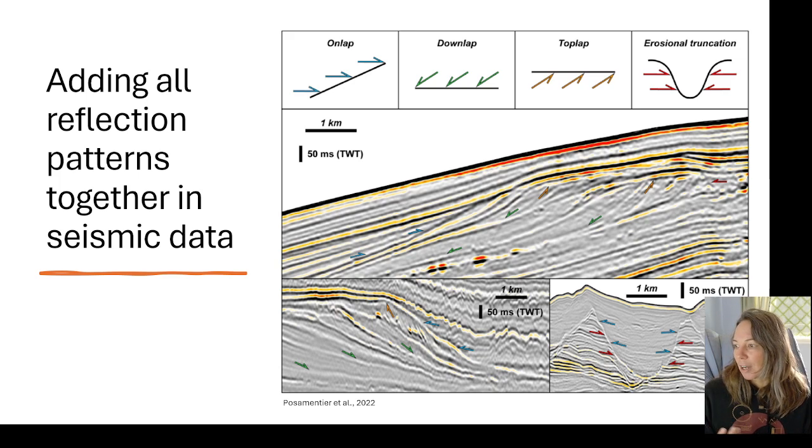What we want to do is combine all of our observations together. Here we've got some reflection patterns. In this case we could see some kind of clinoforms in this area, and they've mapped out some areas of top lap, some areas of down lap with these green arrows, on lap with the blue arrows, and then even over here we've got some erosional truncation. As we start interpreting these patterns, the seismic facies, the continuity, we also want to keep a lookout for these different features which can be very revealing to us.